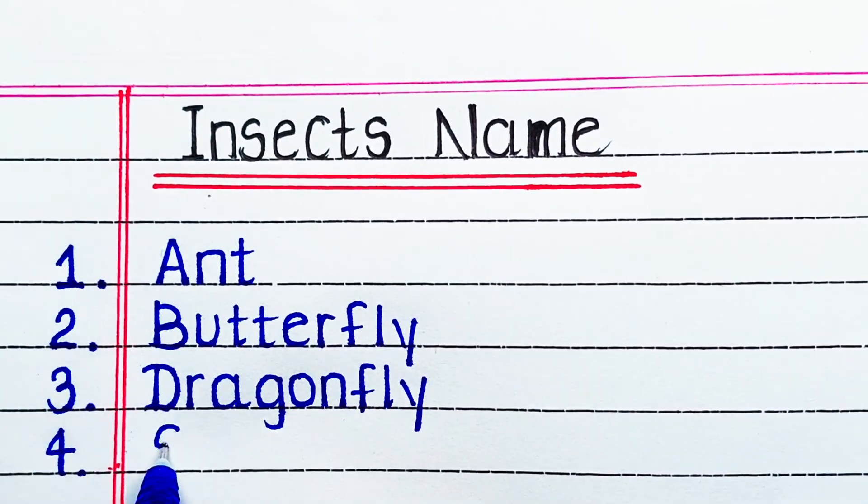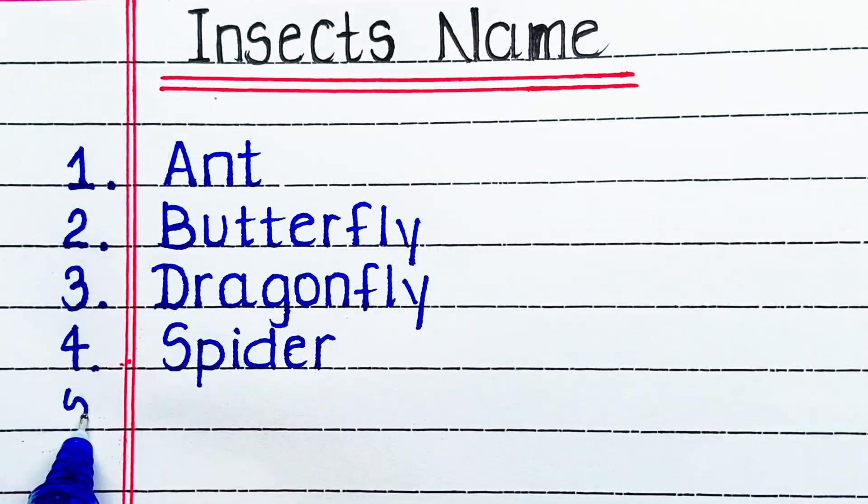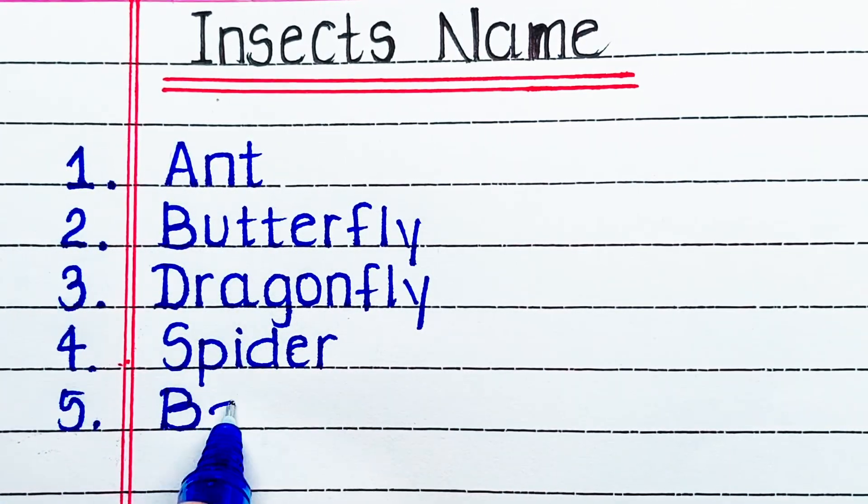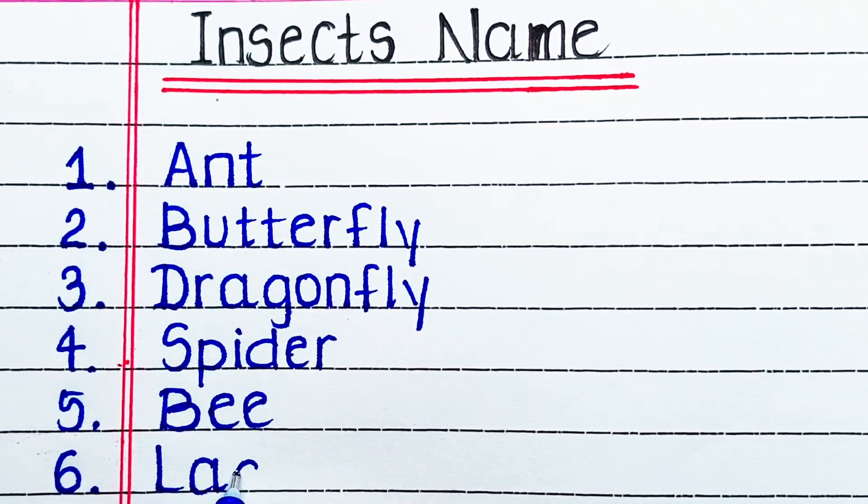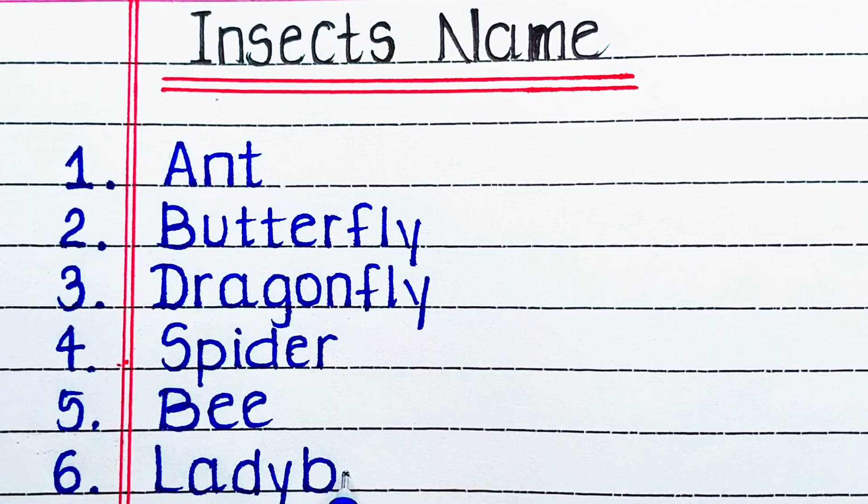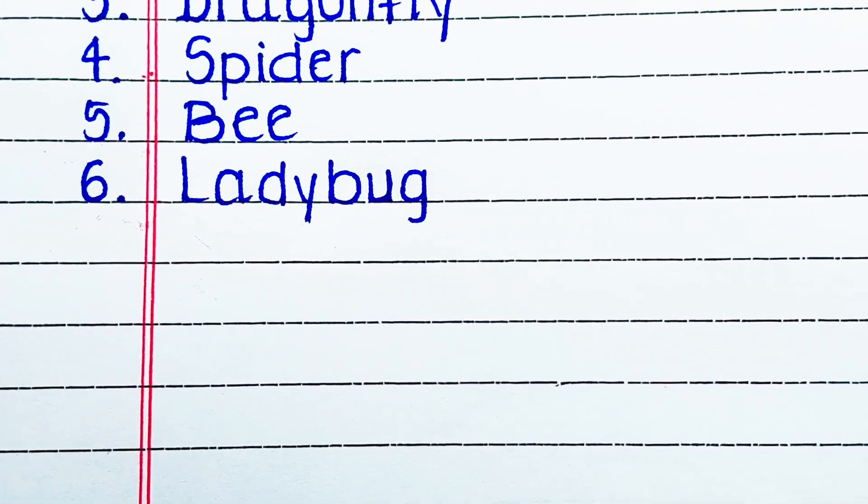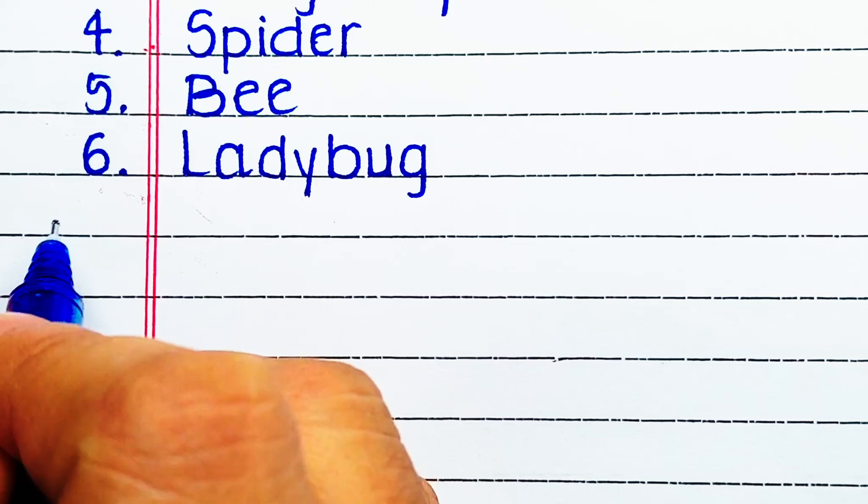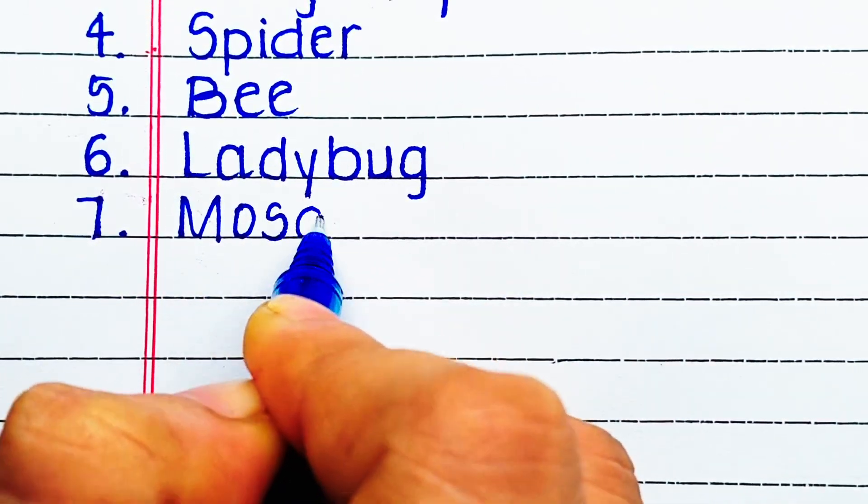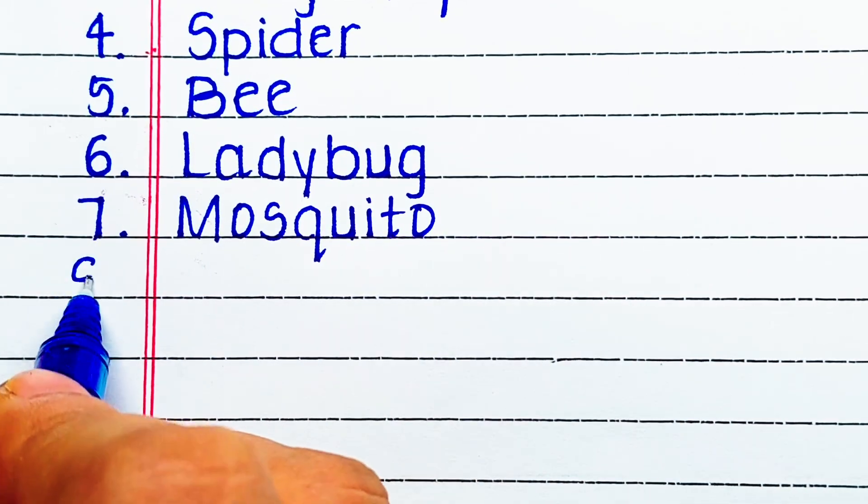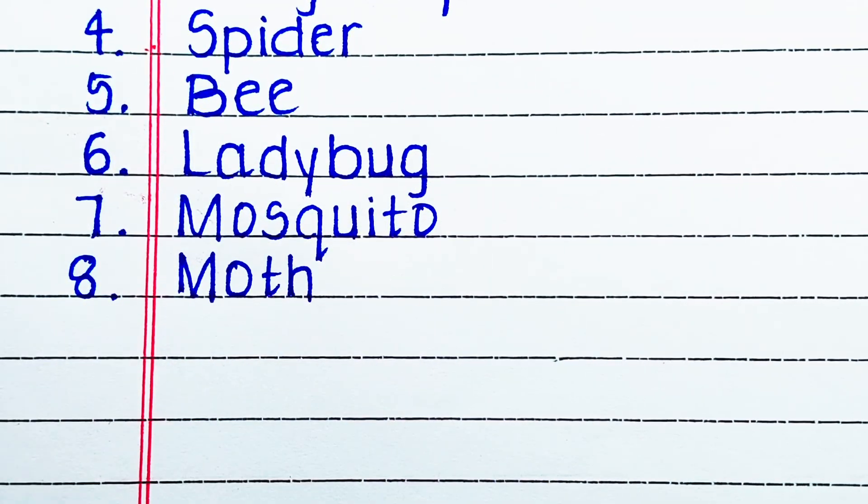Next is S-P-I-D-E-R, spider. Next up we have B-E-E, bee. Next insect in our list is L-A-D-Y-B-U-G, ladybug.